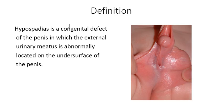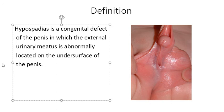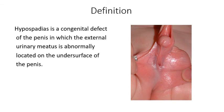Hypospadias by definition is a congenital defect of the penis in which the external urinary meatus is abnormally located on the undersurface of the penis. Normally the external meatus is located at the tip of the glans penis, but in this case it is located on the ventral surface. If the external meatus is located somewhere along this line, it is called hypospadias.